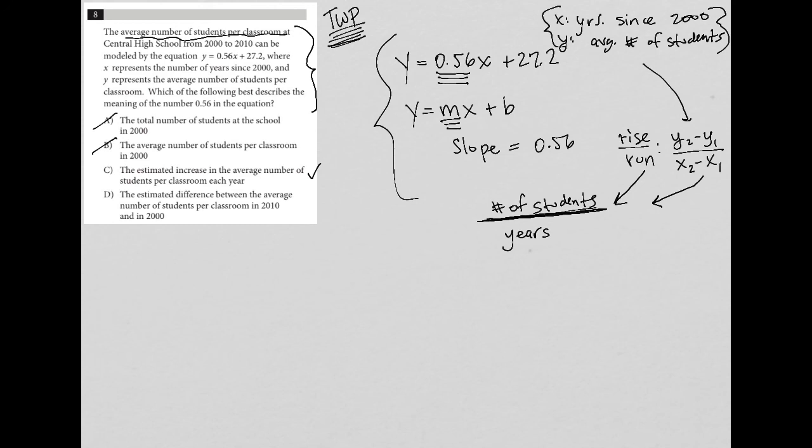However, what that does is immediately focuses you on 2010 versus 2000. And really what we're looking at is a per year situation, not a per, this would be a per 10 years if we're comparing what was happening in 2000 to what's happening in 2010. And that's not exactly, although it's pretty close, it's not exactly what we're looking for for slope or for our M value. So I'm going to say that choice C is the best answer.